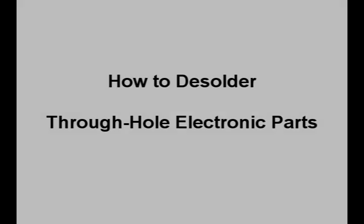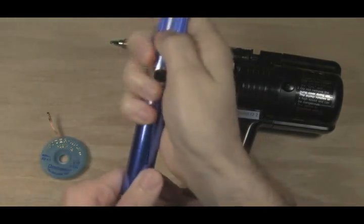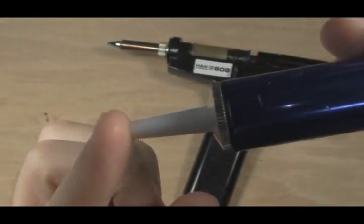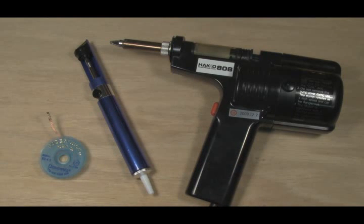This video will demonstrate how to desolder through hole parts with solder wick, a manual desoldering pump or solder sucker, and a desoldering gun, a combined iron and pump. It will also go over why some joints are more difficult to desolder than others.